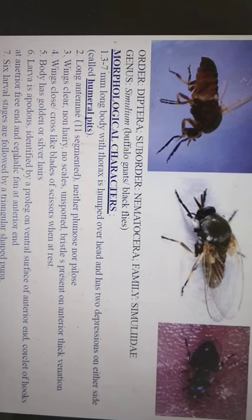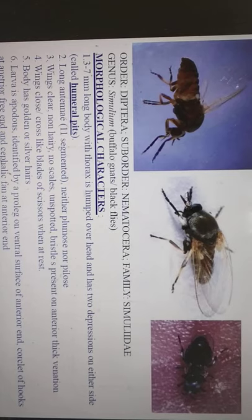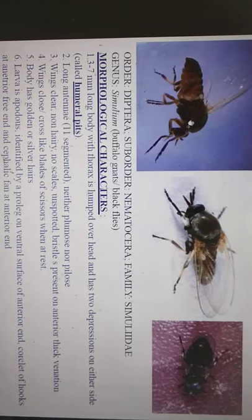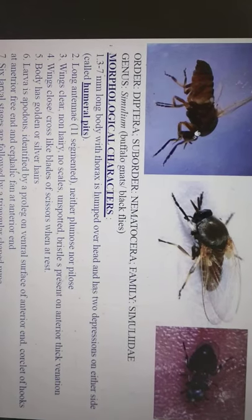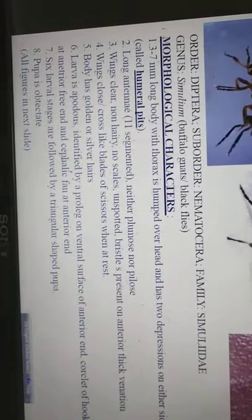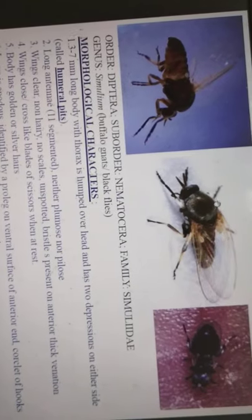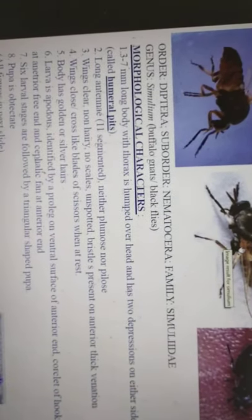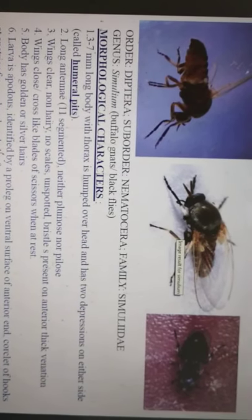The thorax — you can see from the lateral view it is very clear — the thorax is humped. The dorsal view is also clear but the lateral view is better, showing the humped thorax. The antennae are long, seven-segmented. The body has golden-silver hair — the thorax is black in color but the body is covered with golden-silver hair.